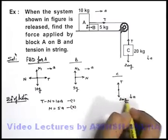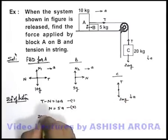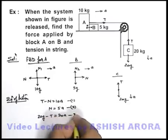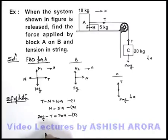And for block C as it is coming down we can write 20g minus T is equal to 20A, that is equation number 3. If we add these 3 equations, we can directly see on adding, this T and N gets cancelled out. So we'll be having is 20g is equal to 35A.